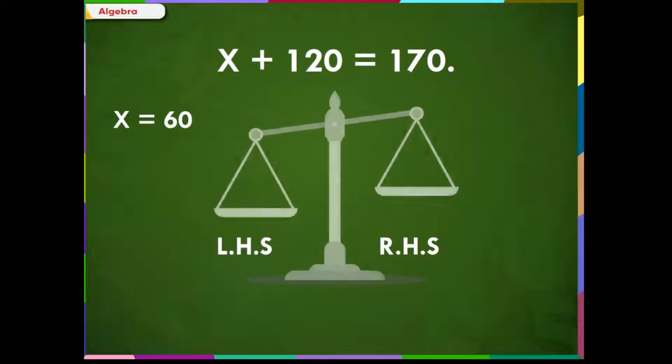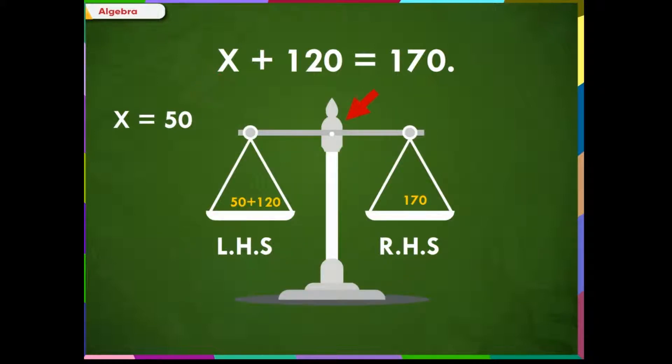If we put x equal to 50, we see that now the equation is balanced. Since the value 50 satisfies the equation to be in balance, therefore x equals 50 is the solution of the equation.